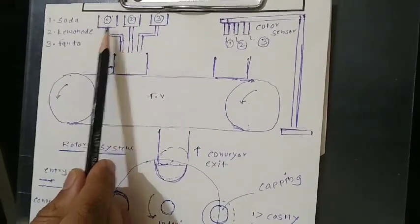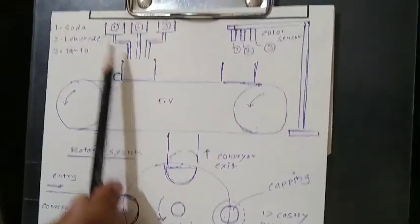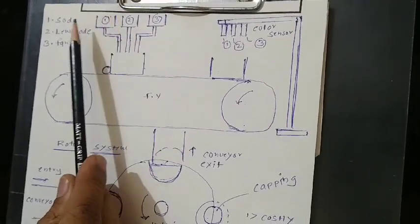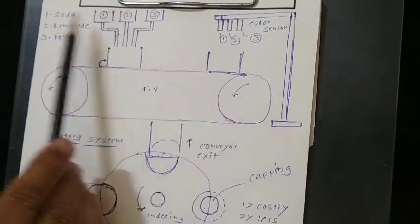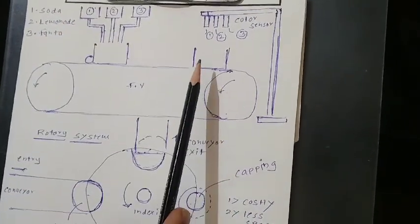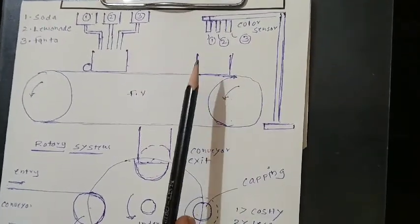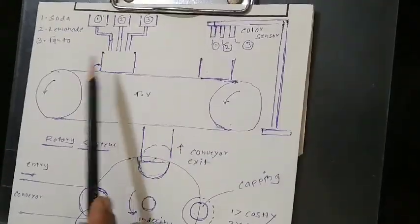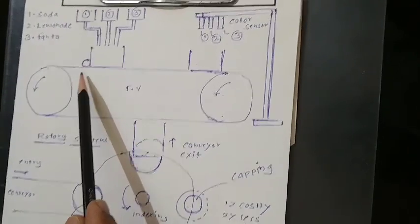Depending on the signal from the color sensor — whether the bottle or container is white, green, or yellow — only the corresponding drain valve will open. If the bottle is white, this drain valve for soda opens. If the container is green, the drain valve for lemonade or pista shrikhand opens. If the bottle or container is yellow, the third tank's drain valve opens for Fanta or amrakhand. The stopping mechanism is invariably the same linear actuator as used in the earlier system.